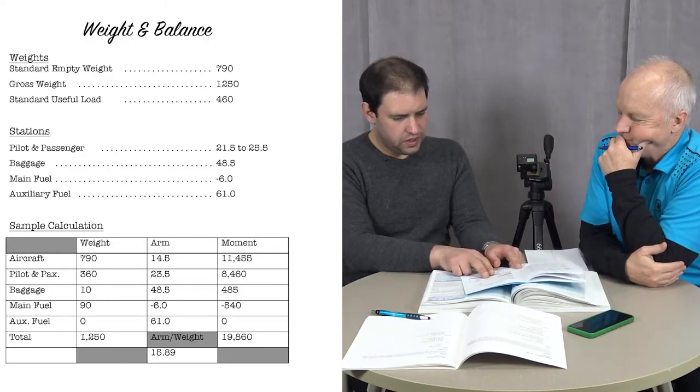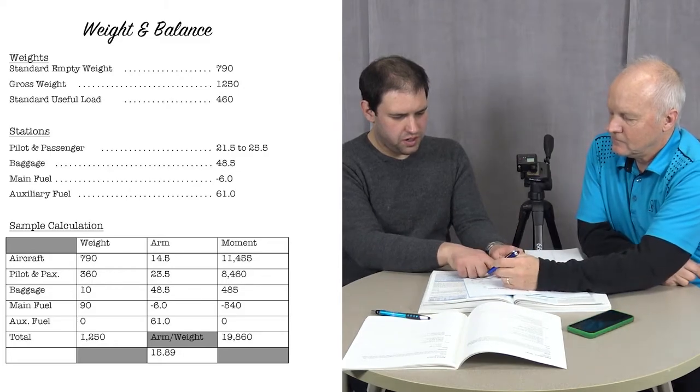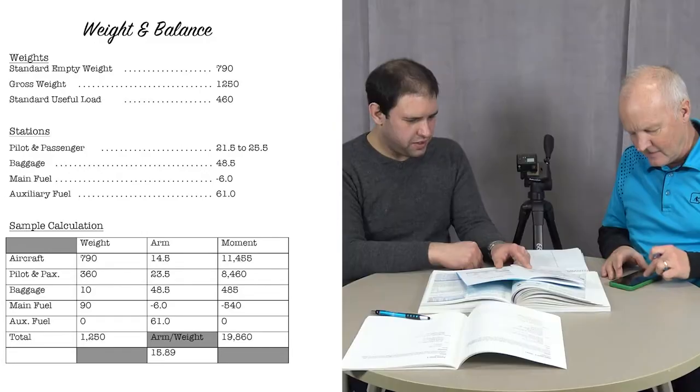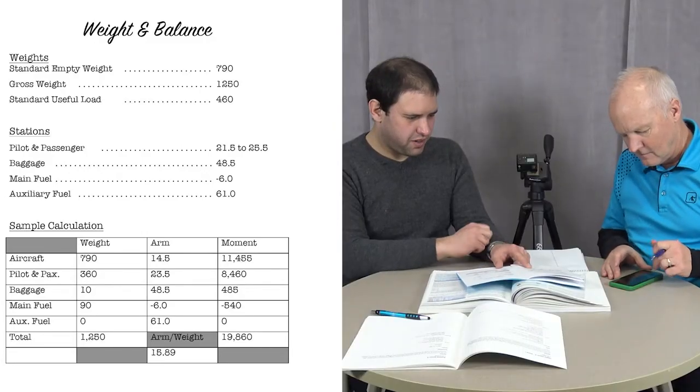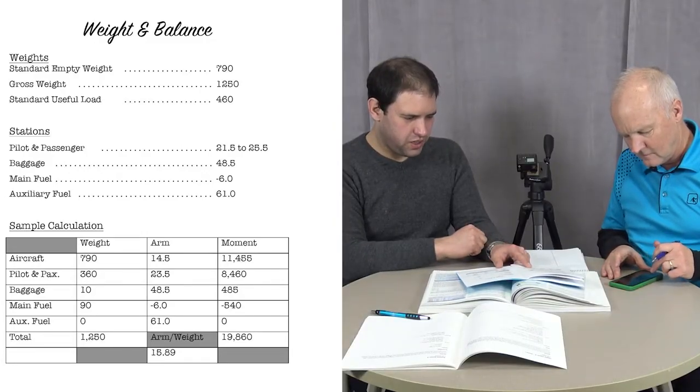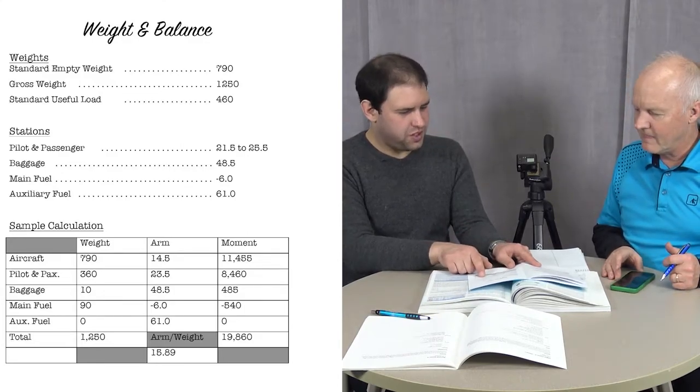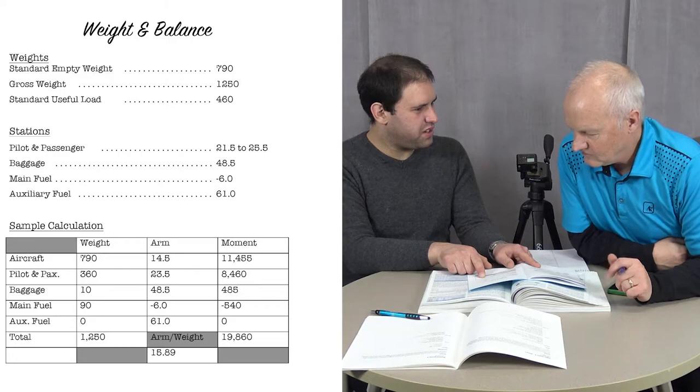If you multiply - get your calculator out - 790 times 14.5 equals 11,455, which indeed is what is listed here for the moment.